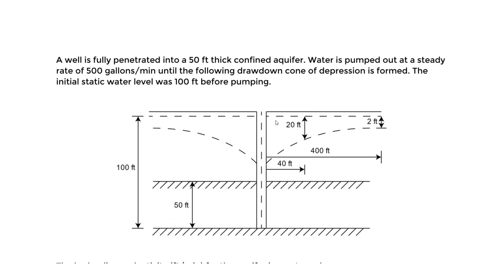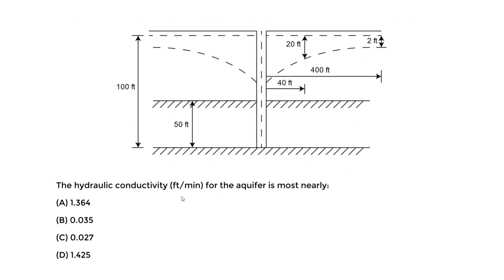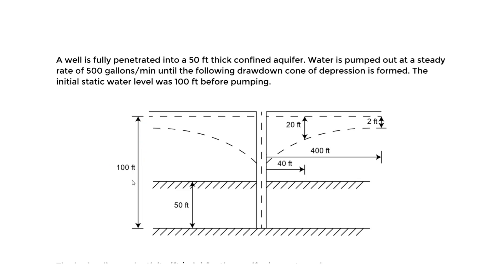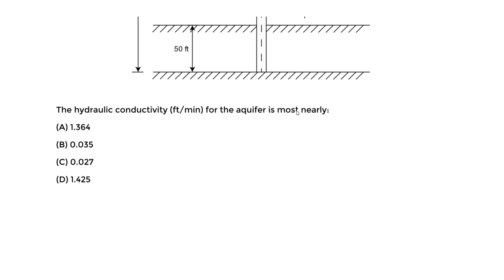Let's look at an example for a confined aquifer and how a well can help us determine the hydraulic conductivity in feet per minute. We have a well fully penetrated into a 50-foot thick confined aquifer, and water is pumped out at a steady rate of 500 gallons per minute until a drawdown cone of depression is formed. The initial static water level was 100 feet before pumping. We're asked: what is the hydraulic conductivity in feet per minute?